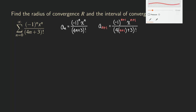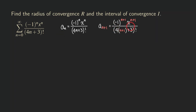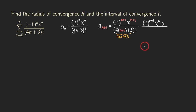Now we need to simplify the denominator, which requires a little bit more work because of the factorial. We are going to get 4 times n plus 1 plus 3 factorial — that's 4n plus 4 plus 3, which is 4n plus 7 factorial. So writing that out, it becomes 4n plus 7, then 4n plus 6, 4n plus 5, 4n plus 4, and then 4n plus 3 factorial.